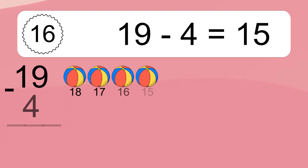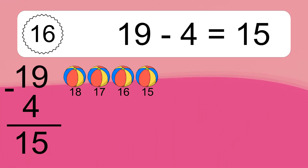19 minus 4 equals what? 19 minus 4 equals 15. Let's count it: 18, 17.